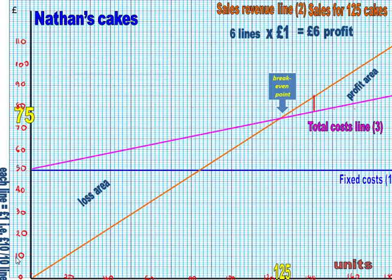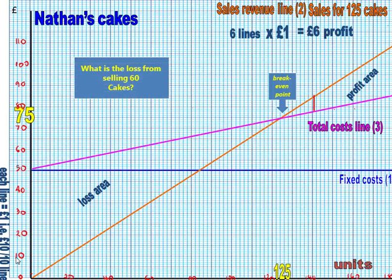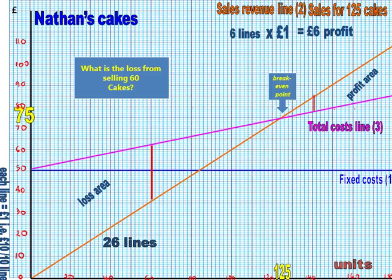For the loss area: if Nathan sells 60 cakes, we find 60 on the graph, which is down here. And we're going to draw a line between those two lines there, and again we're going to count the number of lines — or number of squares — in there. And you should find there are 26 lines. Each line is worth a pound, because I've gone from zero to ten and there are ten lines, so each line represents one pound. Times one will give you 26 pounds loss.